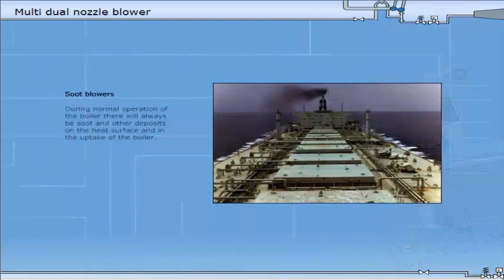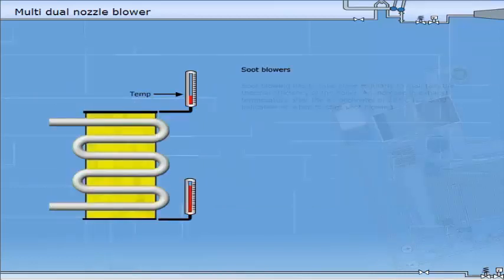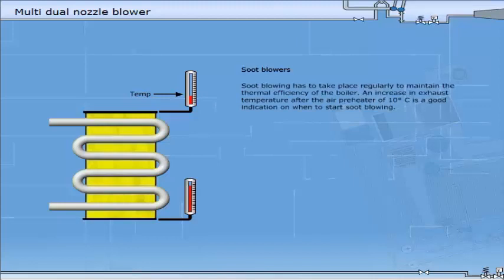During normal operation of the boiler, there will always be soot and other deposits on the heat surface and in the uptake of the boiler. The soot is mostly carbon from incomplete combustion of fuel oil, but ash and vanadium can also be a problem. Soot blowing has to take place regularly to maintain the thermal efficiency of the boiler. An increase in exhaust temperature after the air preheater of 10 degrees centigrade is a good indication of when to start soot blowing.